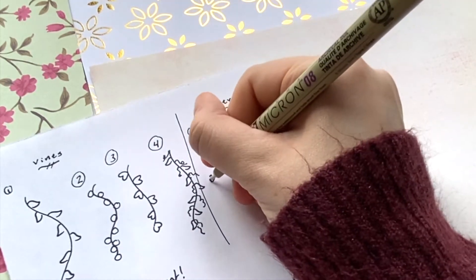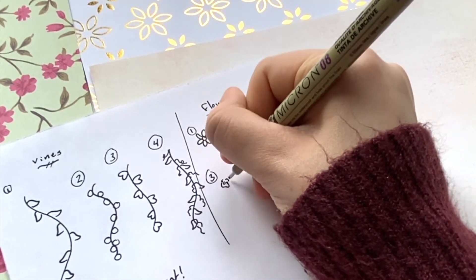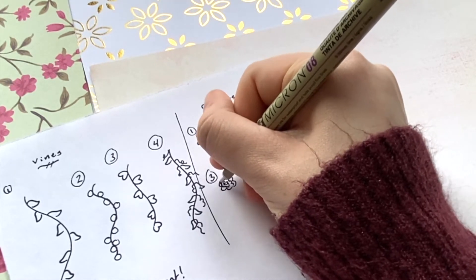And then the third one is more of a rose-like shape. So basically you kind of do a circle in the middle and do half circles all around it to simulate the petals of the rose.